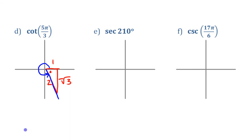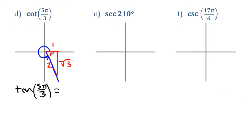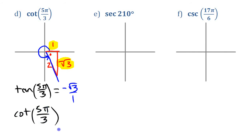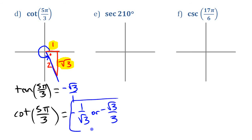With that triangle set up, the easiest approach is to first find the tangent. Tangent is the y-coordinate (opposite) over the x-coordinate (adjacent), so that gives us negative √3 over 1. Then the cotangent is just the reciprocal of that: negative 1 over √3. You could rationalize that to get negative √3/3. Either form is fine.